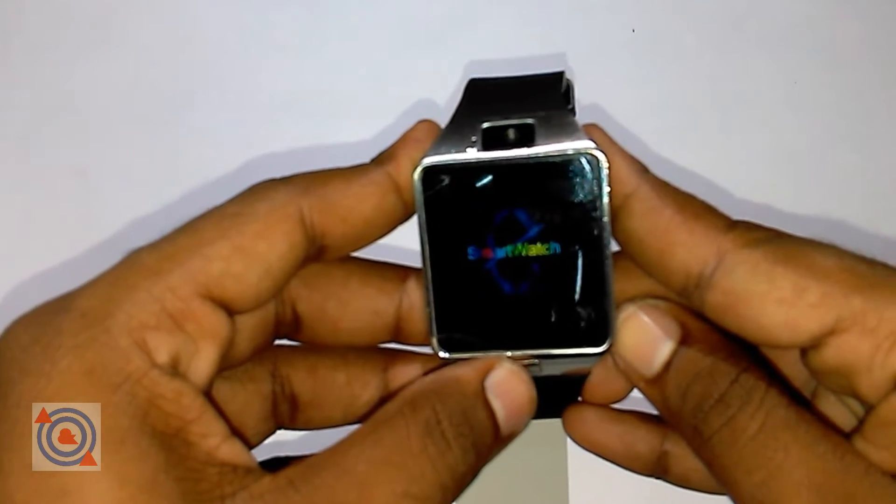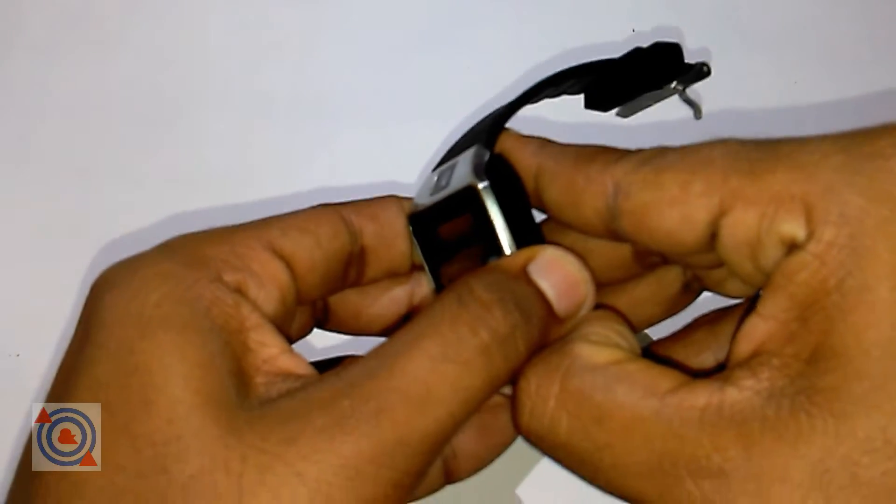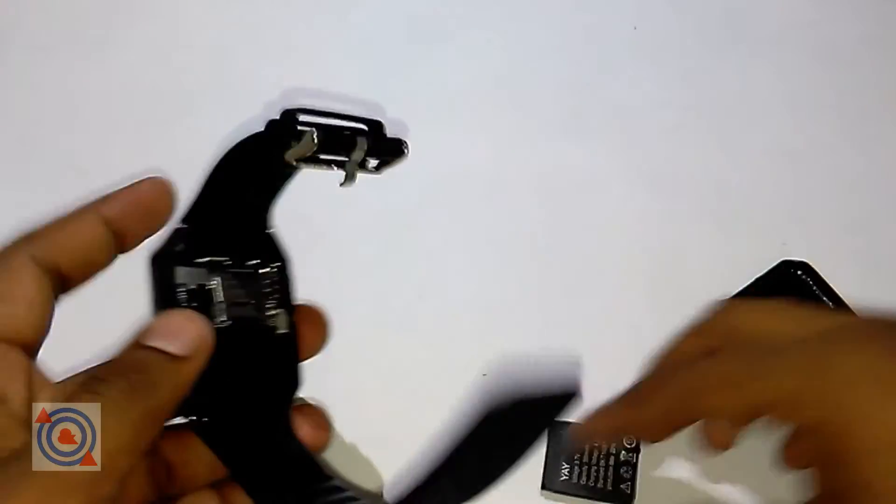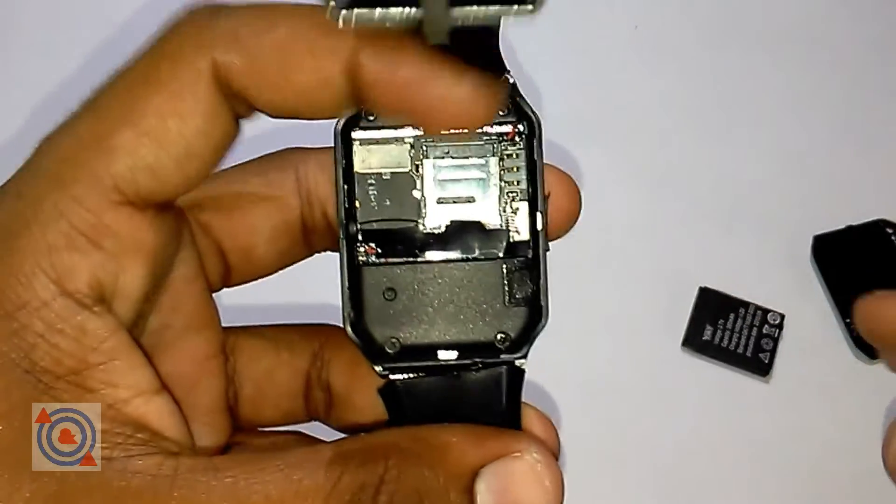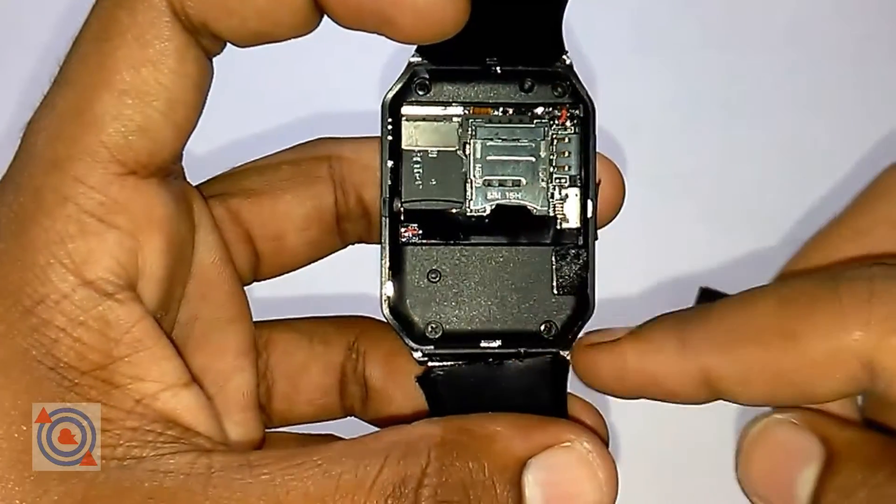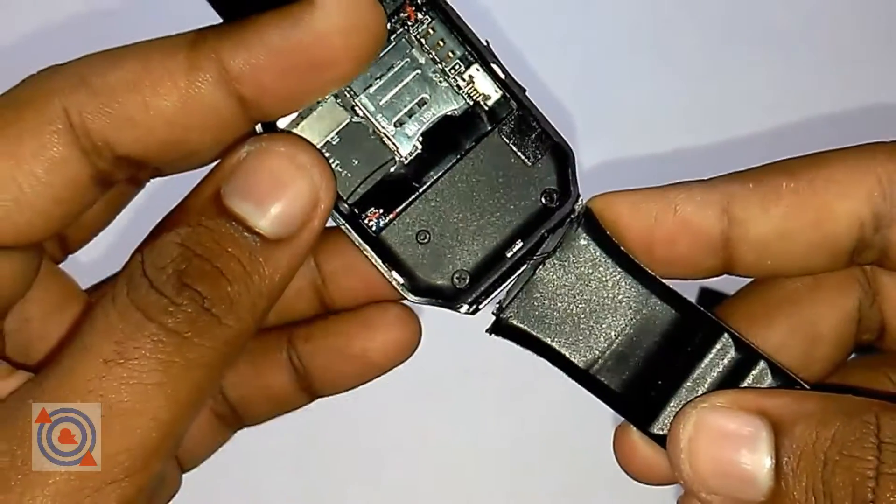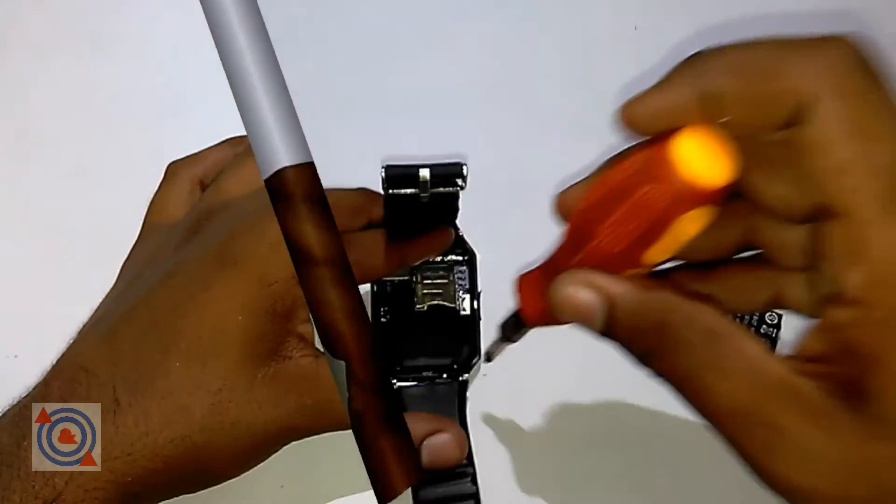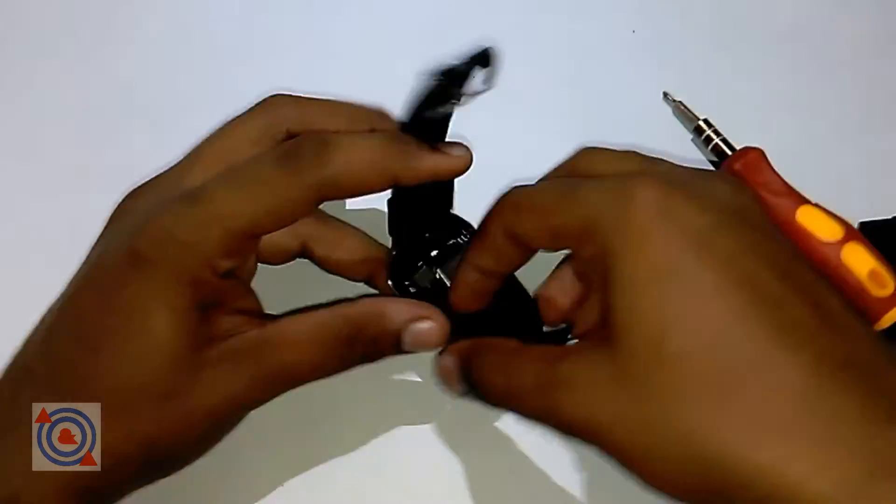Let's remove the back cover. Here we have the battery, and you have to remove these four screws. This strap is actually broken - it got broken. So let's remove the screws.